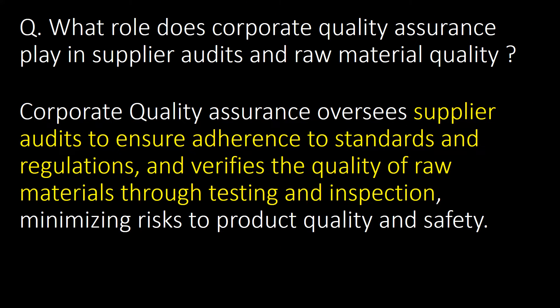What role does Corporate Quality Assurance play in supplier audits and raw material quality? CQA oversees supplier audits to ensure adherence to standards and regulations, and verifies the quality of raw materials through testing and inspection, minimizing risk to product quality and safety.